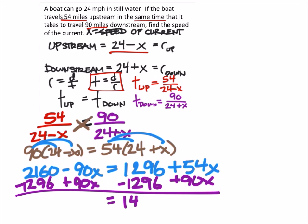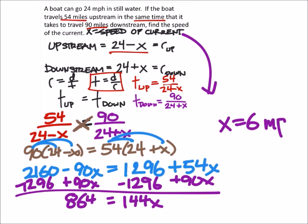So I've got 144x equals, I need to subtract these, so 864. So that's 864. So 864 divided by the 144, and we see that x is 6, which is the speed of the current, so miles per hour.